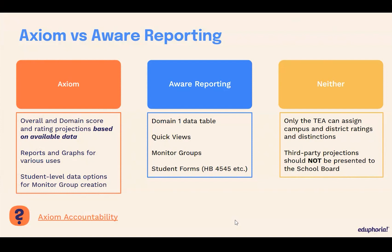What is Axiom? We wanted to provide users — because we know some of you are new to using Axiom and some of you are experienced users — with an overview of what Axiom is able to do. You're able to run reports based on your overall and domain score. You're going to be creating reports based on those projections on the available data that you have for STAR. You're also able to create custom reports and graphs for different uses as you're planning your long-term interventions for students. And you'll also be able to create monitor groups based on the student-level data that is in Axiom, and that will integrate with AWARE. So it really helps a district think about how to get started on planning for those long-term goals as you think about your accountability ratings.